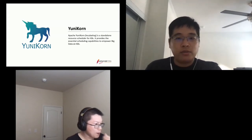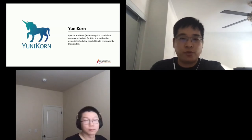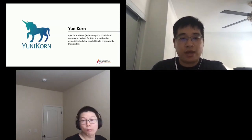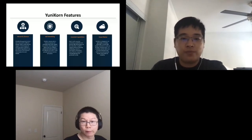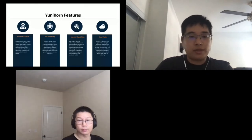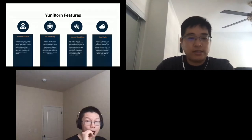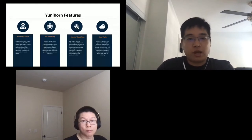The second feature is job scheduling, which is very important for big data workloads. Yunikorn queues jobs in resource queues and schedules them with respect to a certain ordering policy. The ordering policy is key to ensuring jobs are scheduled as expected, and the policy can be customized. Right now we have FIFO and FAIR, depending on different needs. We are also working on priority support at the job level.